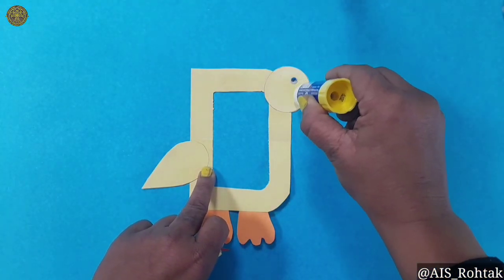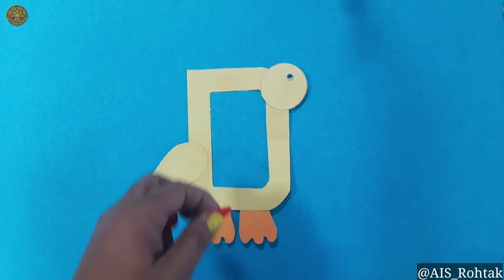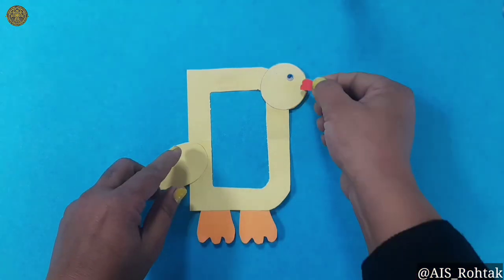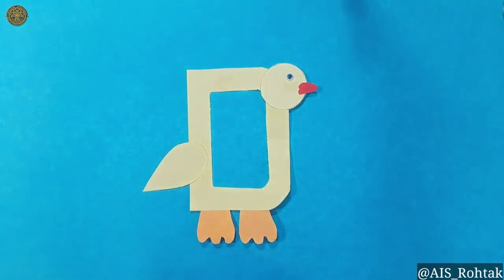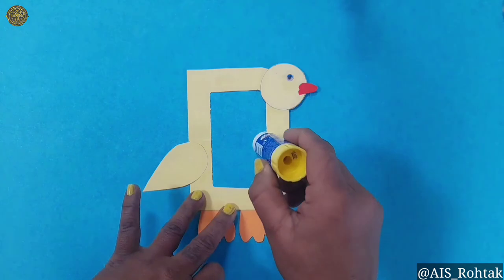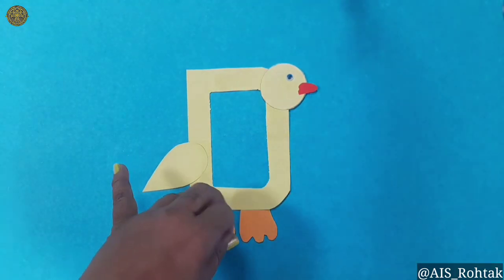Apply glue stick again and paste the beak of the duck. After pasting the beak, we will paste the feather of the duck here.